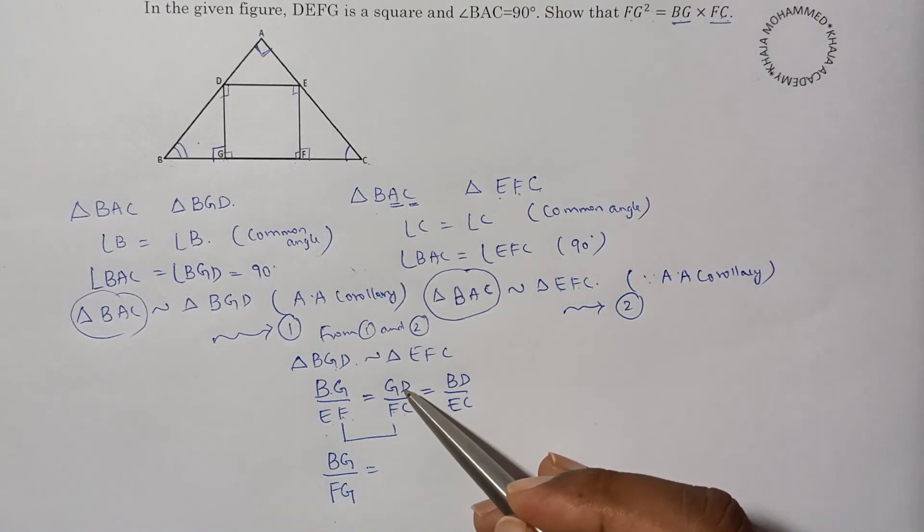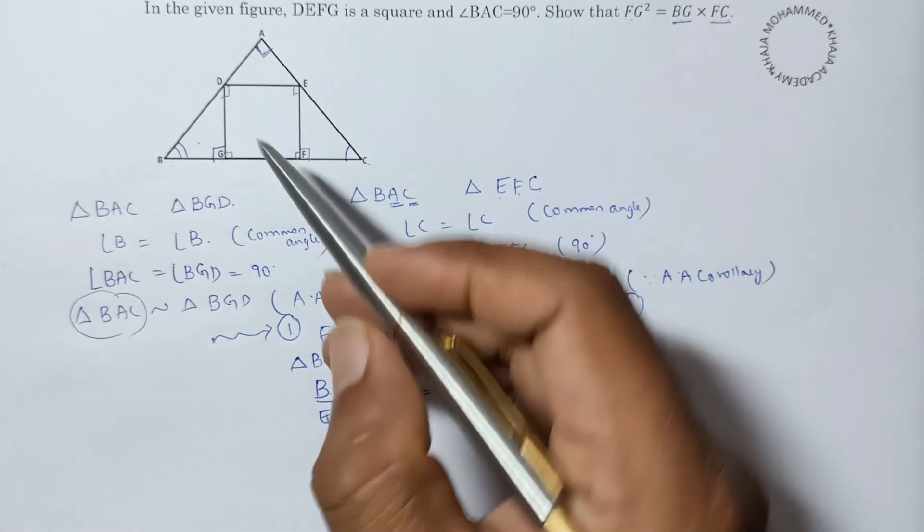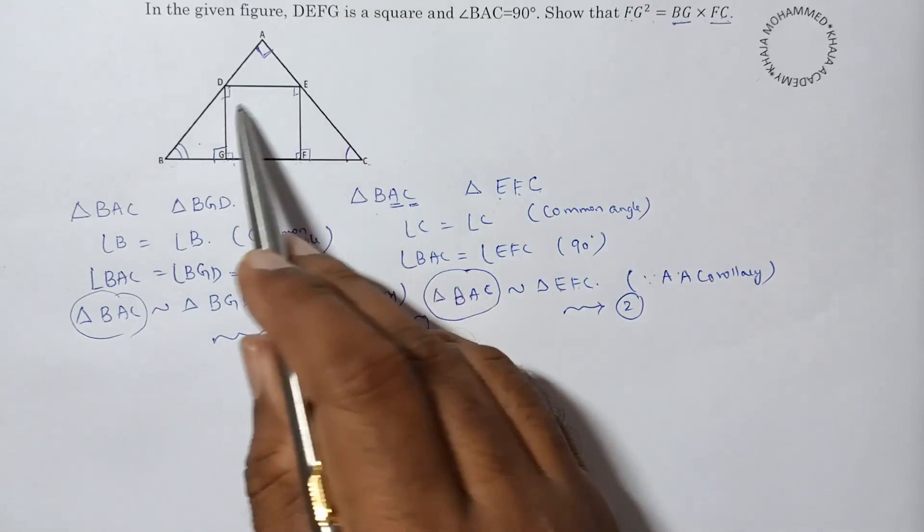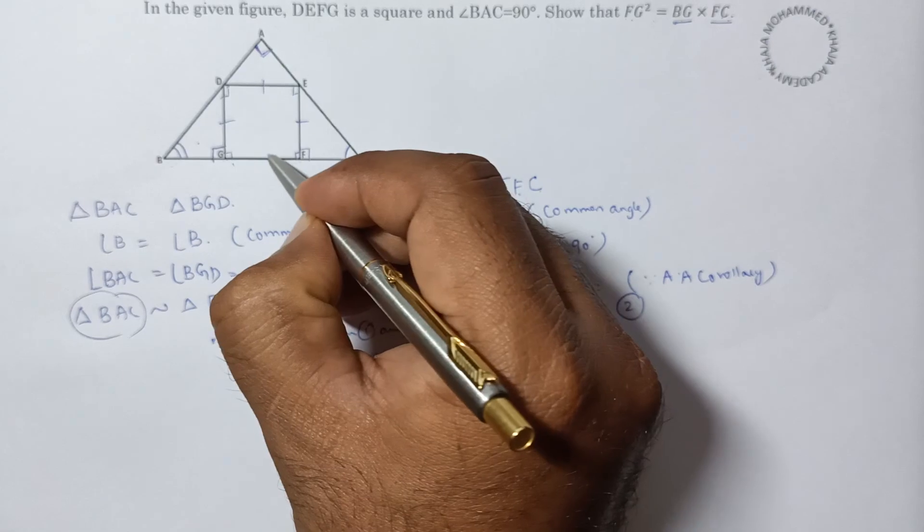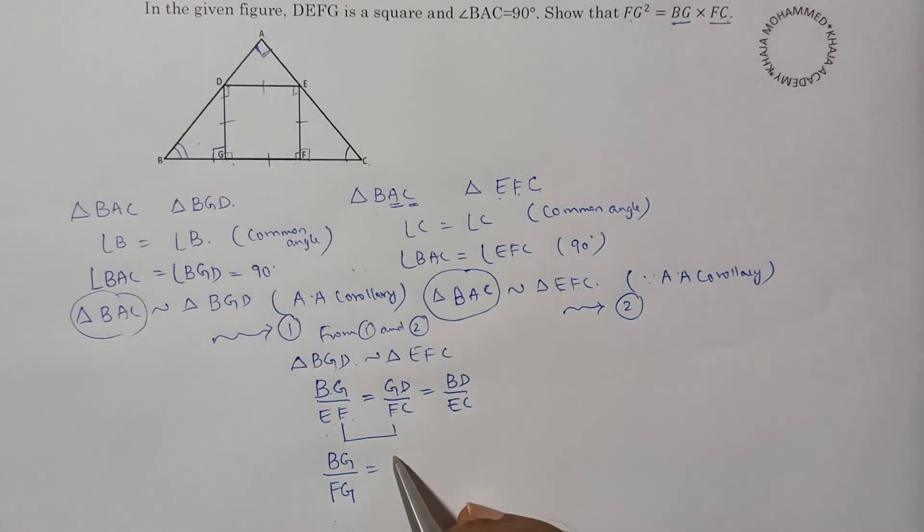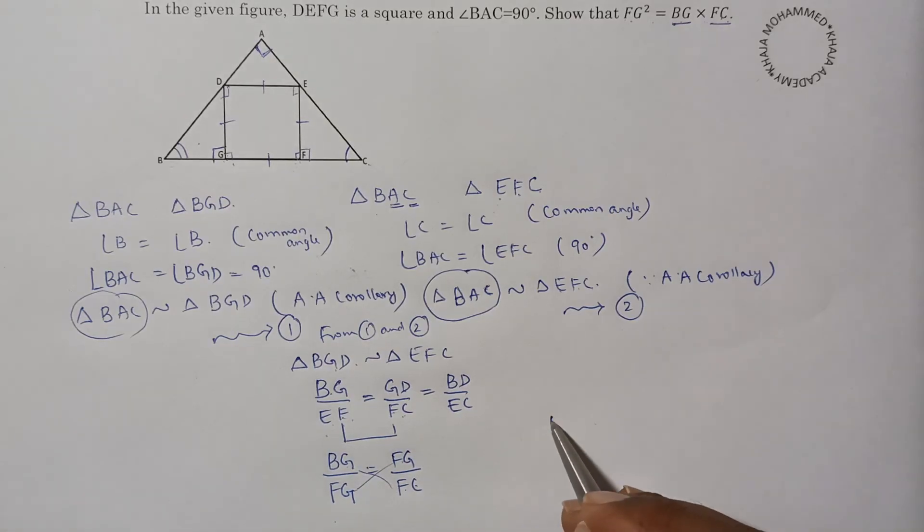Next, GD - I can write as FG because DEFG is a square and all sides are equal. So GD I will write as FG by FC. If you cross multiply, FG into FG equals FG square equals BG into FC.